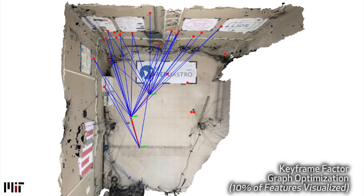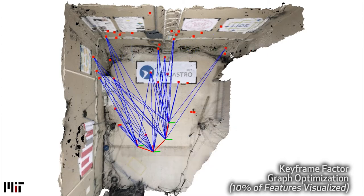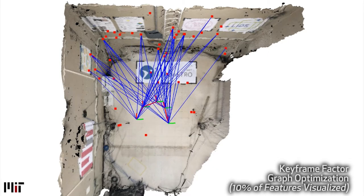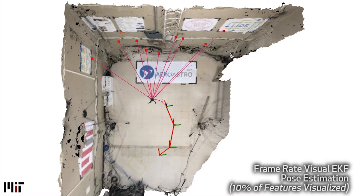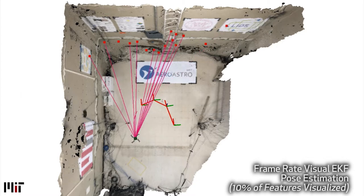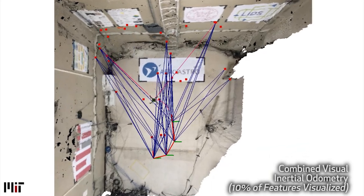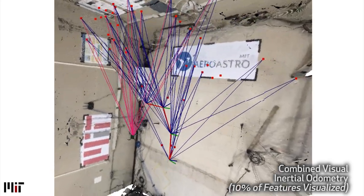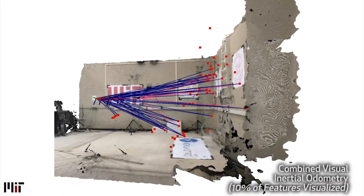Our visual inertial odometry algorithm has two layers. The first is a keyframe-based fixed lag smoother, which uses IMU and camera measurements to optimize for the pose of the drone, the 3D location of visual landmarks, and the bias of the IMU. The second layer is an extended Kalman filter, which uses the smoother's estimate of 3D landmark locations as a map, and performs frame rate updates against it to generate a state estimate at a high enough rate for closed-loop control.